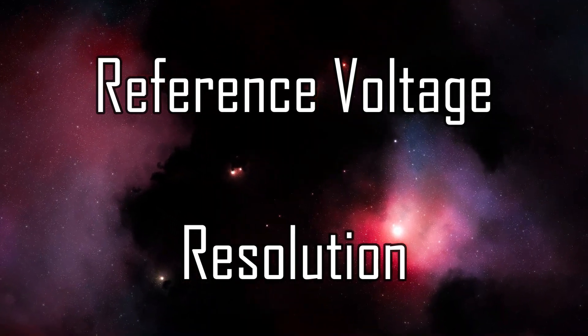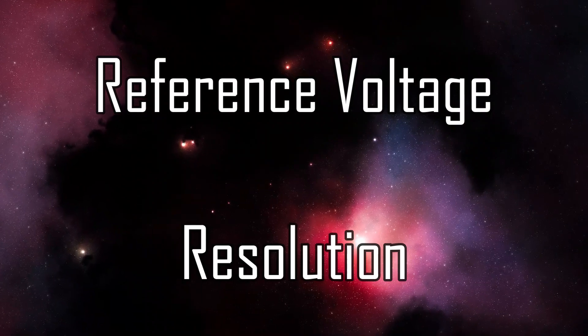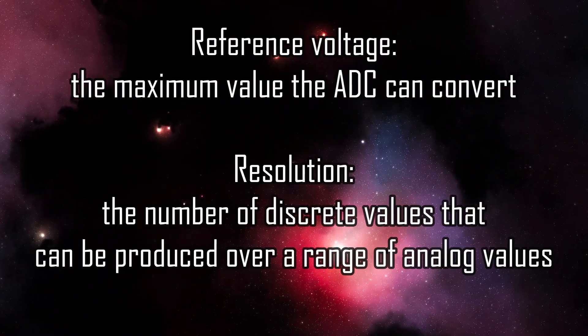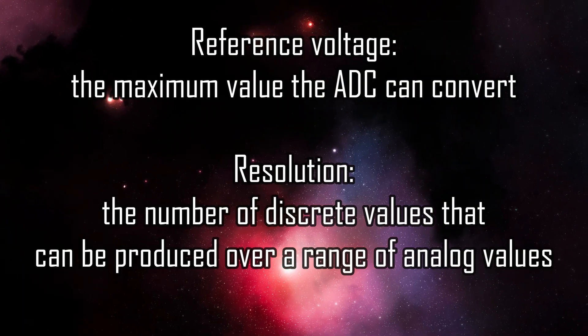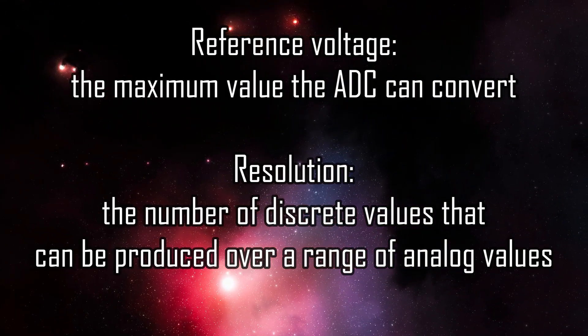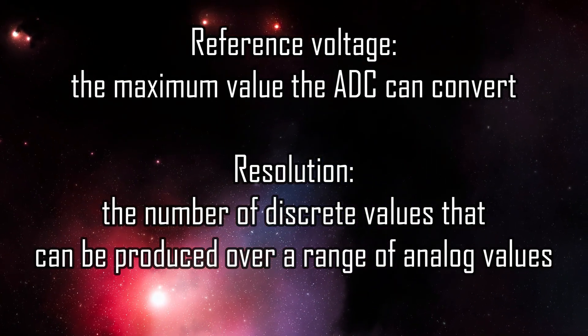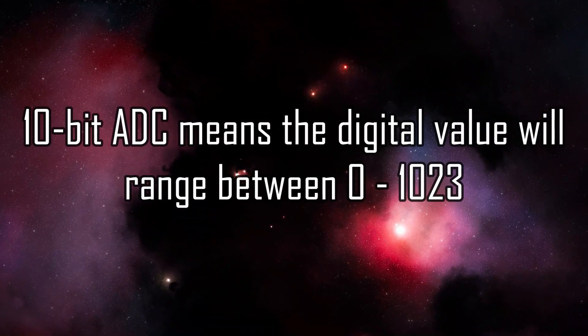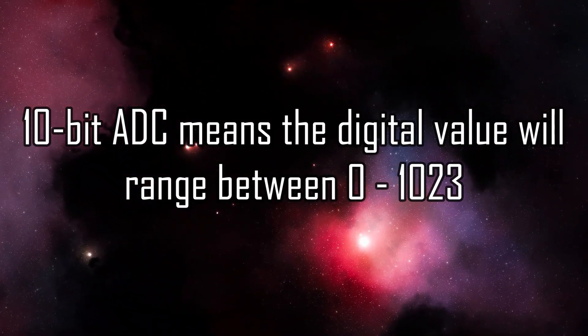This is where ADCs come in, and conveniently, the Arduino has one built in. Analog to digital conversions are dependent on the ADC reference voltage and resolution, or bit number. The reference voltage is the maximum value that the ADC can convert. The resolution indicates the number of discrete values that can be produced over the range of analog values. You can find the resolution on the Arduino's datasheet. The UNO has a 10-bit ADC, so we can get a digital value anywhere between 0 and 1023 if we connect to the 5V pin on the board.